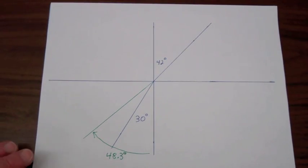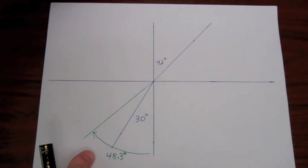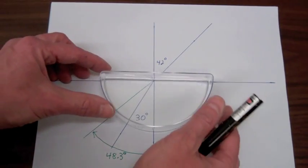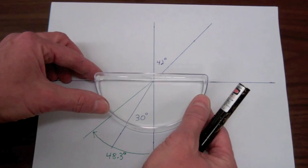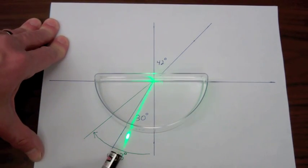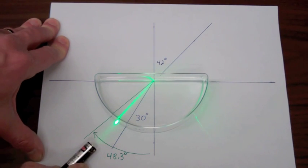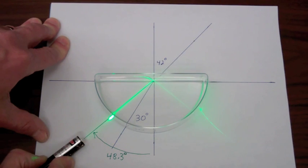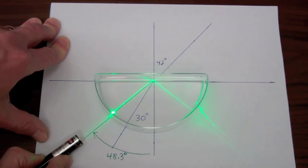So I've measured off an angle of about forty eight point three degrees at least as well as I could with the protractor I had. So let me put in the water again and now as the incident beam approaches forty eight point three when we get to forty eight point three you see the total internal reflection occur.